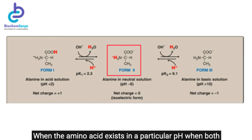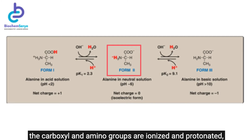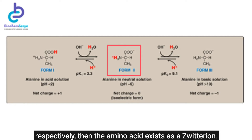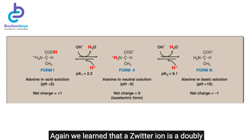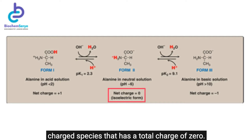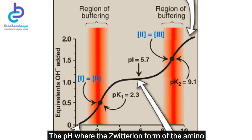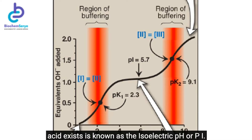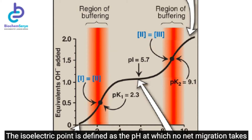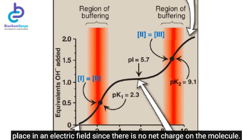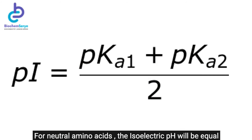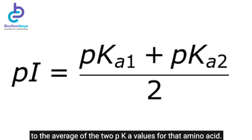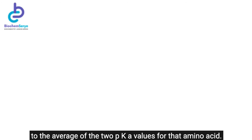When an amino acid exists at a pH where both the carboxyl and amino groups are ionized and protonated respectively, the amino acid exists as a zwitterion — a doubly charged species with a total charge of zero. The pH where the zwitterion form exists is known as the isoelectric pH or pI. The isoelectric point is the pH at which no net migration takes place in an electric field. For neutral amino acids, the isoelectric pH equals the average of the two pKa values.